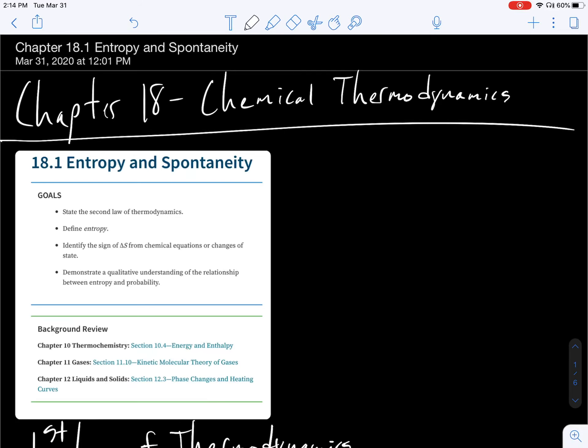Welcome back to general chemistry class, chapter 18 titled Chemical Thermodynamics. Today we're going to be focusing on 18.1 Entropy and Spontaneity.